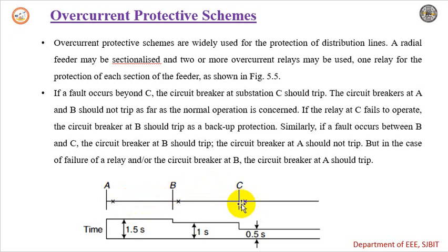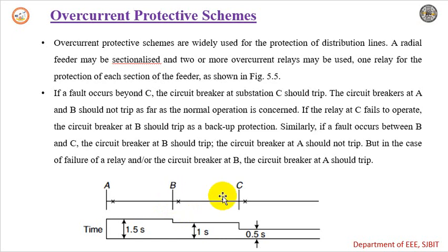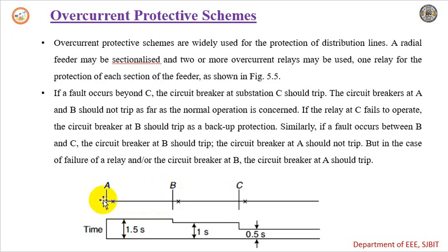If the relay at C fails to operate for any faults beyond C, then the circuit breaker at B should trip as backup protection. Similarly, if a fault occurs between sections B and C, the circuit breaker at B should trip and circuit breaker A should not trip. But in case of a failure in operation of the relay at substation B, then the circuit breaker at A should trip. This is how the overcurrent protective schemes are used for distribution lines.